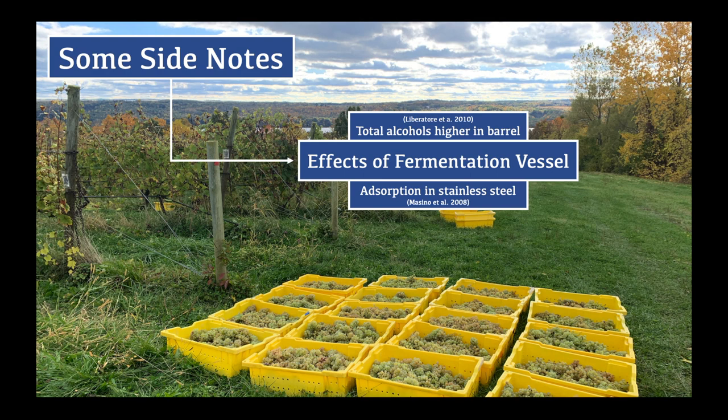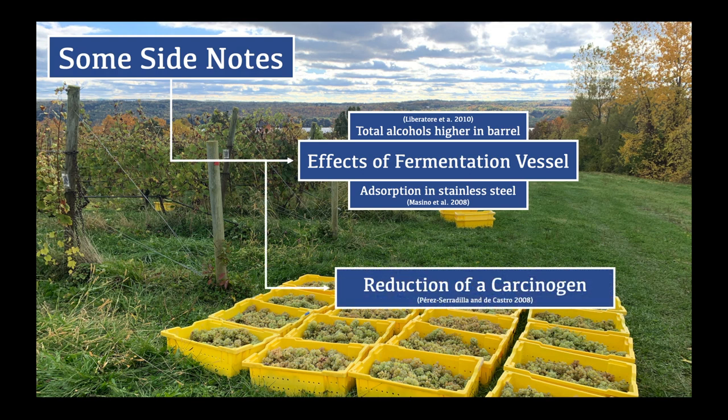Another interesting point is that the fining properties of lees extend beyond flavor. It turns out that lees contact can actually reduce concentrations of ochratoxin A, a carcinogenic mycotoxin, by about 70% in white wine and 50% in red wine.